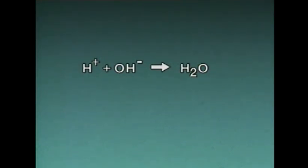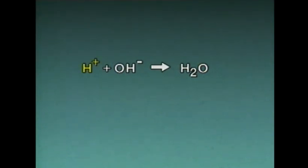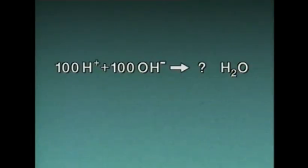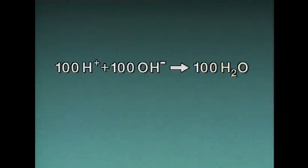The second step in material balancing is to use the balanced equation to determine the relative amounts of substances that will react with each other. For instance, in this reaction, one hydrogen ion reacts with one hydroxyl ion to form one molecule of water. In principle, 100 hydrogen ions will react with 100 hydroxyl ions to form exactly 100 molecules of water, with no hydrogen or hydroxyl ions left over.